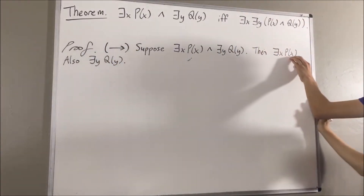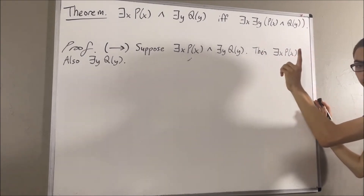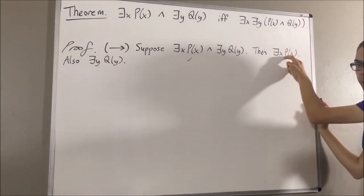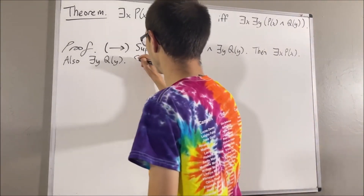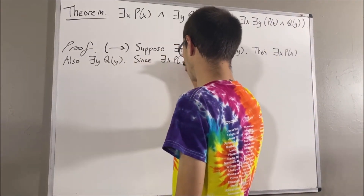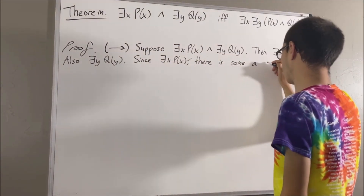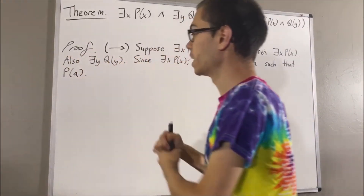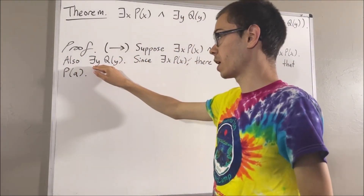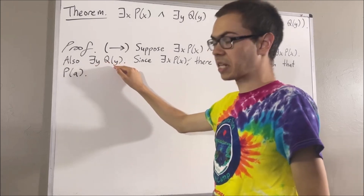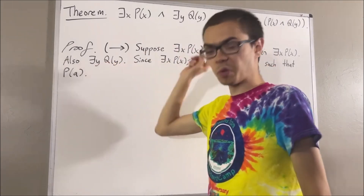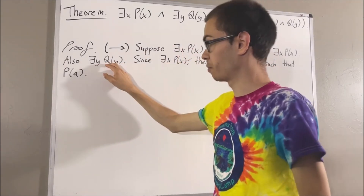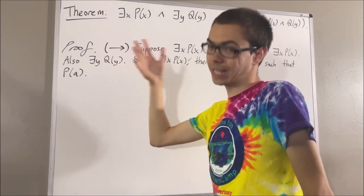Since there exists an x such that p of x, this means there is at least one object which satisfies statement p. I'll call that object a. Similarly, since there exists a y such that q of y, this means there is at least one object which satisfies statement q. I'll call that object b.